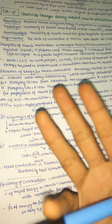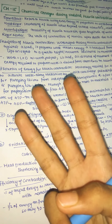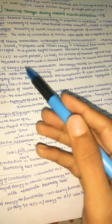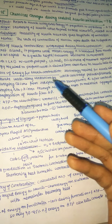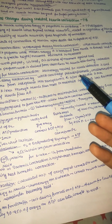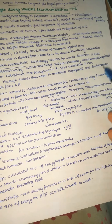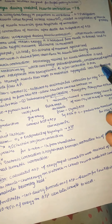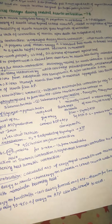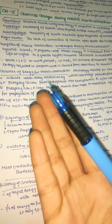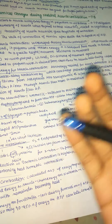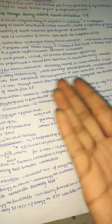There are three main sources of energy for muscle contraction. Most energy is required to actuate the walk-along mechanism by which cross-bridges pull actin filaments. A small amount of energy is required for pumping calcium ions from the sarcoplasm back into the sarcoplasmic reticulum after contraction is over.